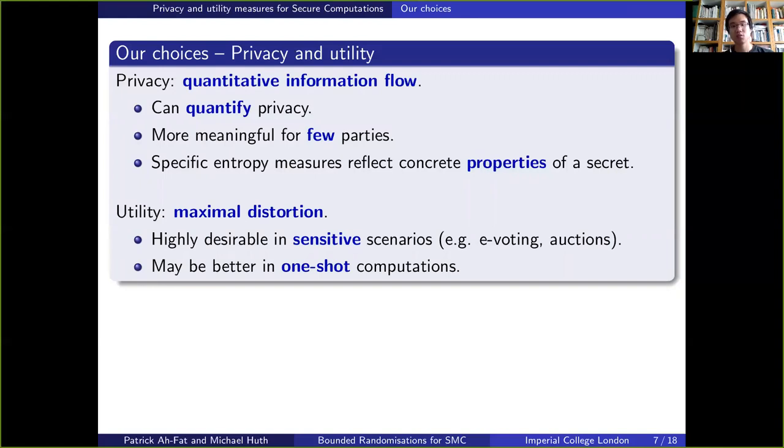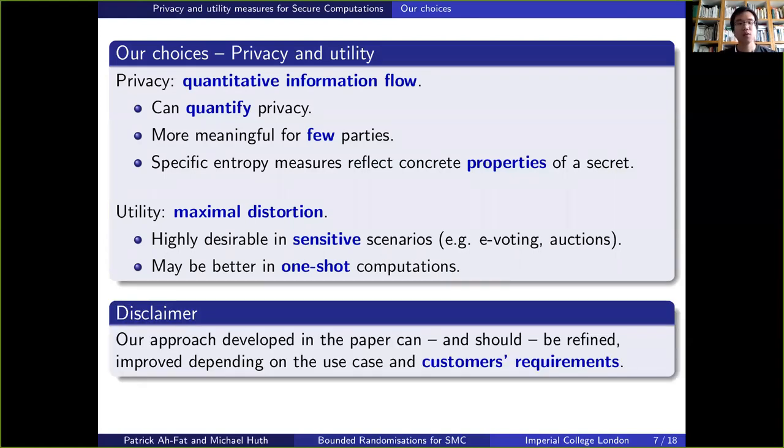The utility, on the other hand, will be measured as the maximal distortion. We believe that it is highly desirable to have maximal distortion guarantees in sensitive scenarios, as well as in one-shot computations. We believe, however, that our approach should be refined and improved depending on the use case and the customer's requirements, as we strongly believe that there doesn't exist a unique choice of privacy and utility that is more suited than all others in all circumstances.